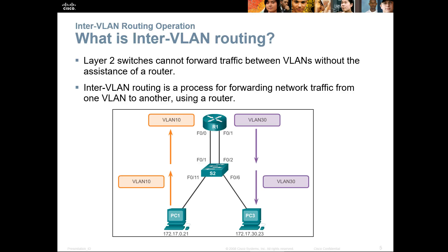Inter-VLAN routing means communicating between VLANs, which requires going up to some type of Layer 3 device. Here we have a router, a switch, and two PCs on different VLANs. A PC in VLAN 10 will travel up the switch through a dedicated access line to the router — all in VLAN 10. The router processes and retags the packet, sending it down the VLAN 30 link all the way to PC3. That is legacy technology. Layer 2 switches cannot forward between different VLANs without a Layer 3 device.